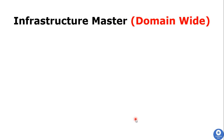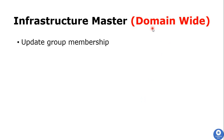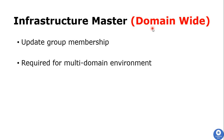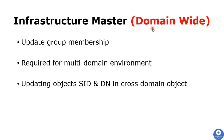The last role is Infrastructure Master, which is a domain-level role — there is one Infrastructure Master in each domain in the Active Directory forest. This role updates group membership; for example, if you add a member to an existing group, this role updates all other domain controllers or global catalog servers about the change. It is required for multi-domain environments, not for single-domain environments, and it is responsible for updating SID and distinguished names in cross-domain object references.